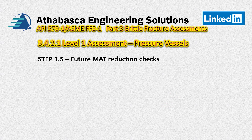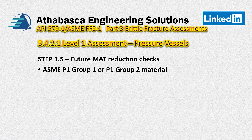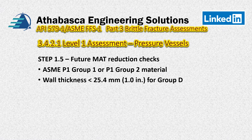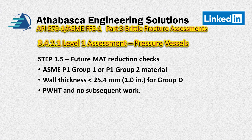We're going to look at step 1.5, future MAT reduction checks, so we can use our curve and then continue. These are some of the restrictions: it has to be an API P1 Group 1 or P1 Group 2 material, which is basically your carbon steel material, in order to be considered. Your wall thickness has to be less than one inch for Group D materials, and the post-weld heat treatment has to be done with no subsequent work based upon that.